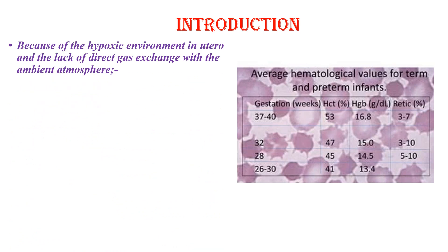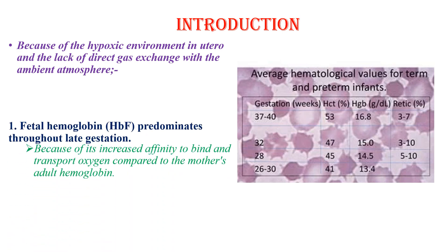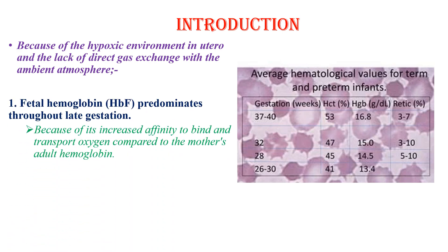Because of the hypoxic environment in utero and the lack of direct gas exchange with the ambient atmosphere, fetal hemoglobin predominates throughout late gestation. Because of this increased affinity to bind and transport oxygen compared to the mother's adult hemoglobin, this is an adaptation mechanism by which the fetal body delivers adequate oxygen to the tissues. The hypoxic environment needs hemoglobin that has increased affinity to bind and transport oxygen to the tissue.